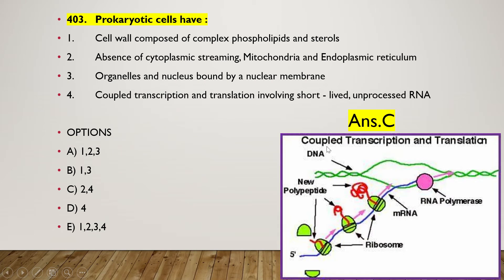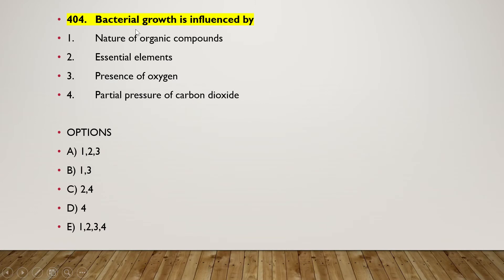Here we see coupled transcription and translation: the DNA strand produces mRNA through transcription by RNA polymerase, and ribosomes are already translating at the same time. So transcription and translation are going on simultaneously — this is the coupled transcription and translation process.